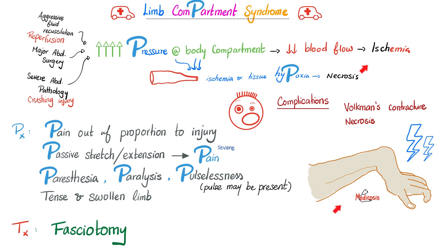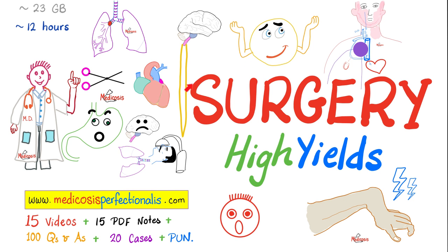The patient will complain of pain that is out of proportion to the injury. If you passively stretch or extend the arm, it hurts severely. There is tingling, numbness, pins and needles — paresthesia. The patient cannot move the arm — paralysis. Sometimes you can feel no pulse because the pressure destroyed the vessel — pulselessness. The limb is very tense and swollen, treated with emergent fasciotomy. To learn about abdominal and orbital compartment syndrome, download my surgery high-yields course at medicosisperfectionalis.com.